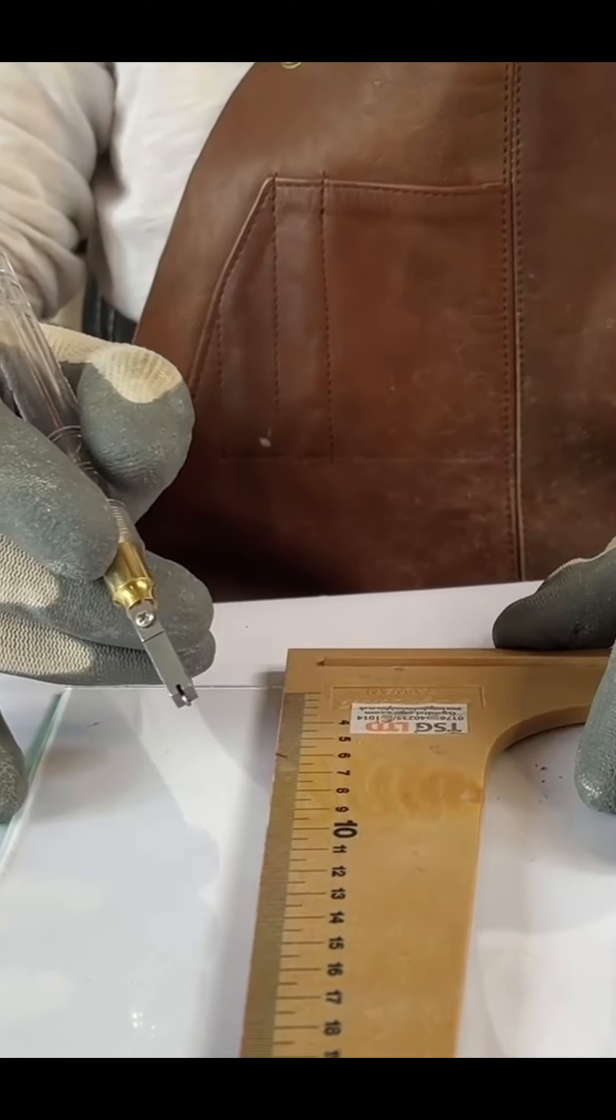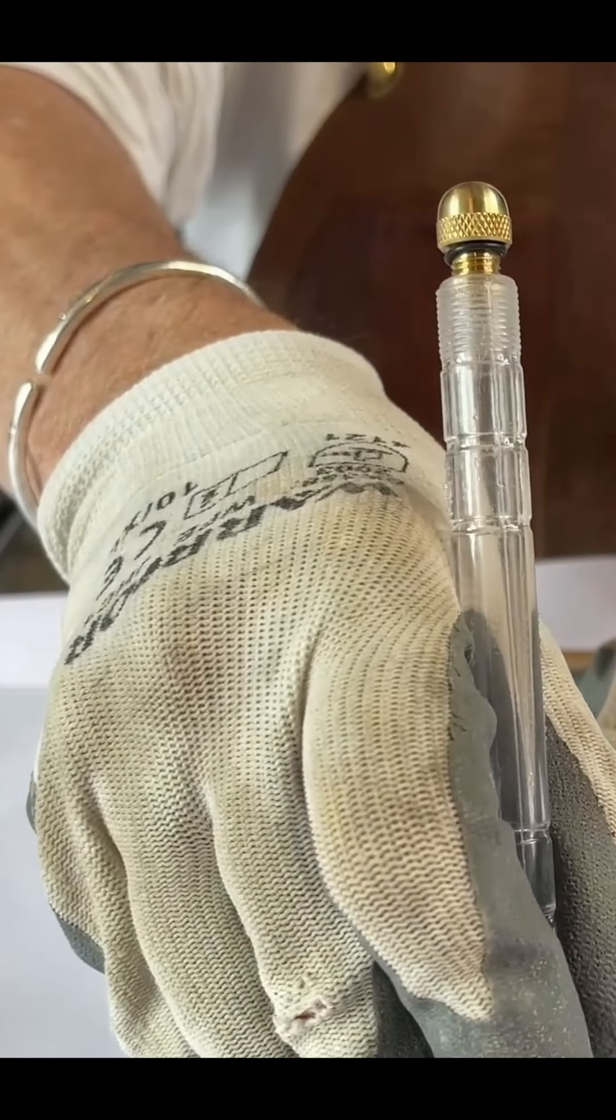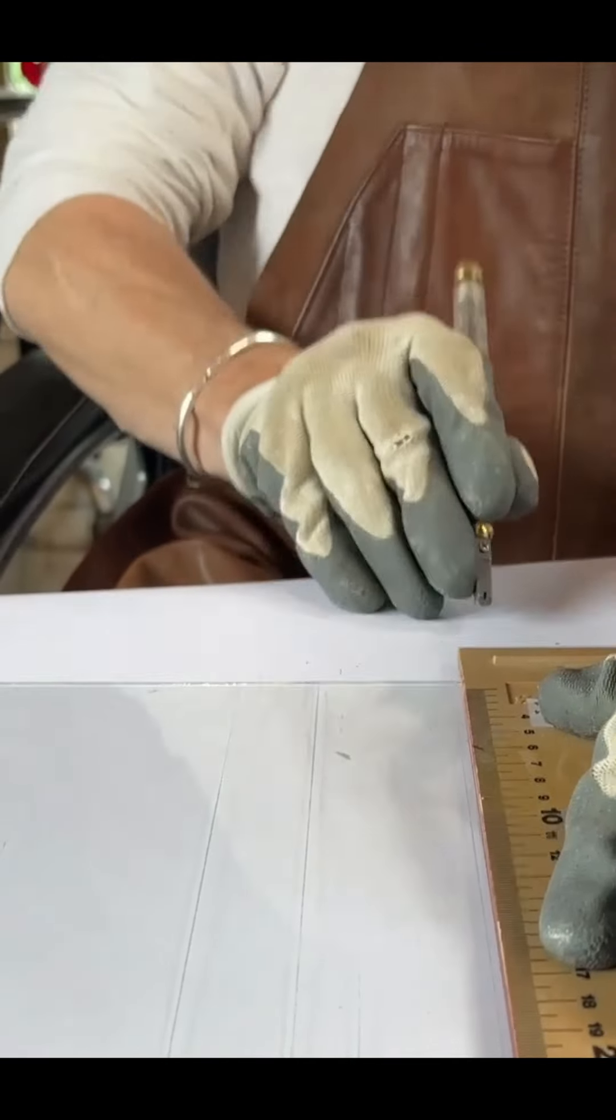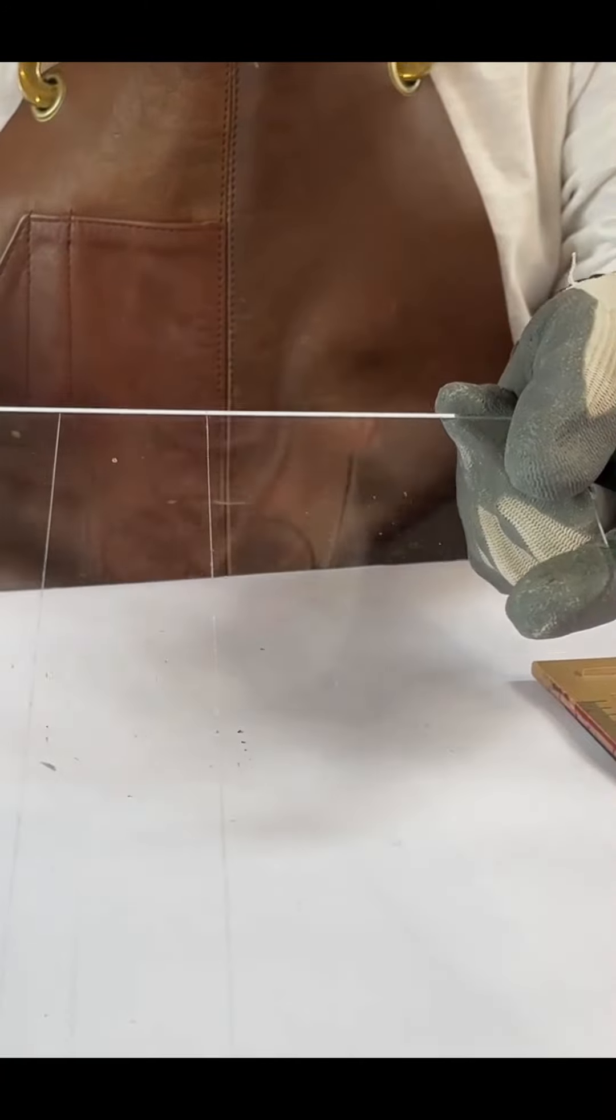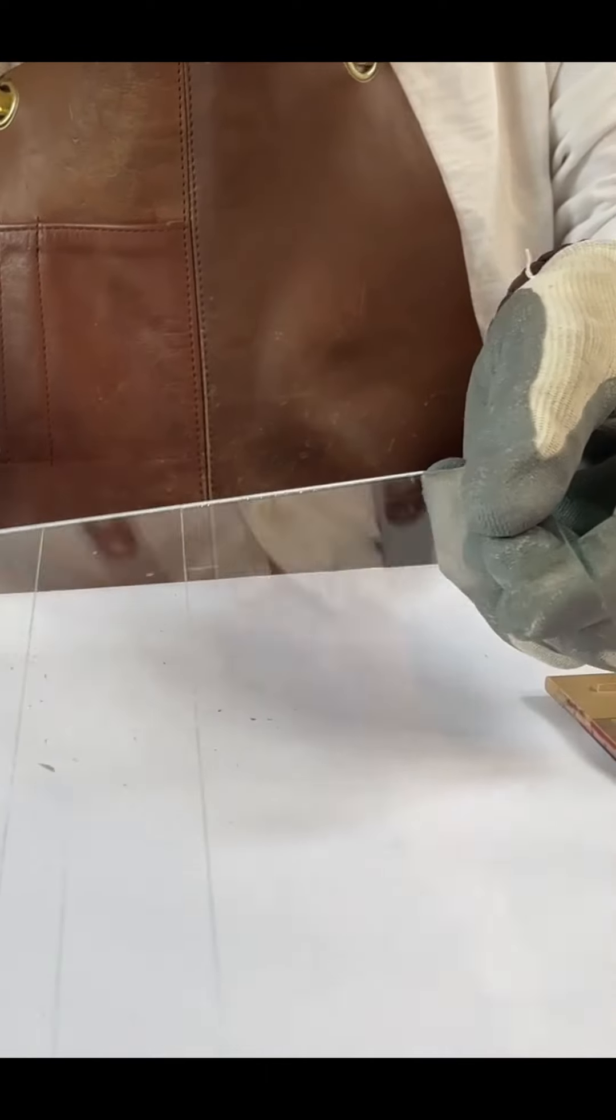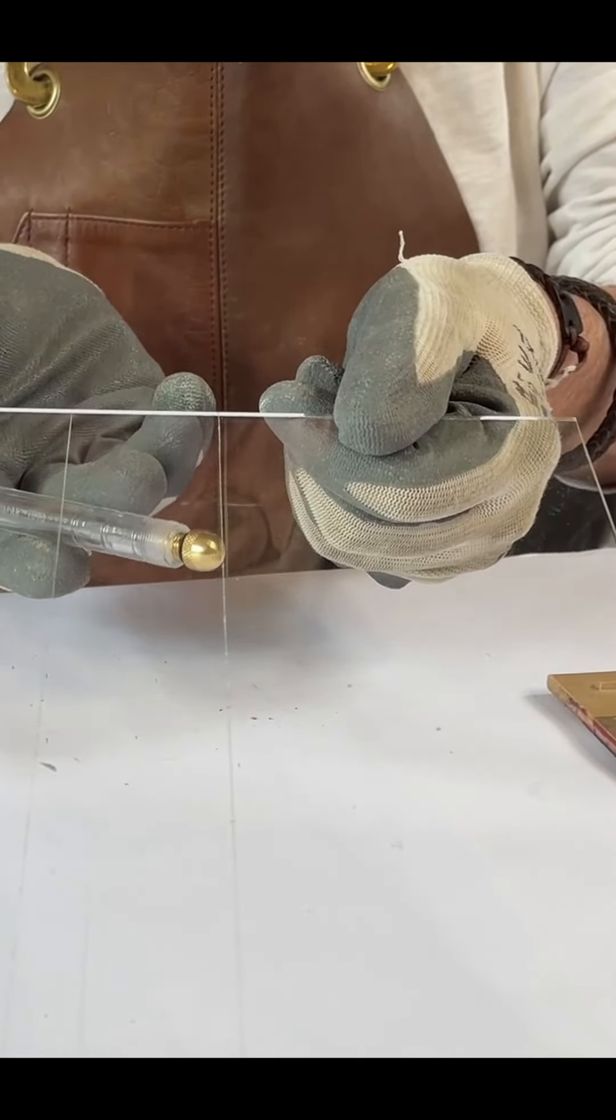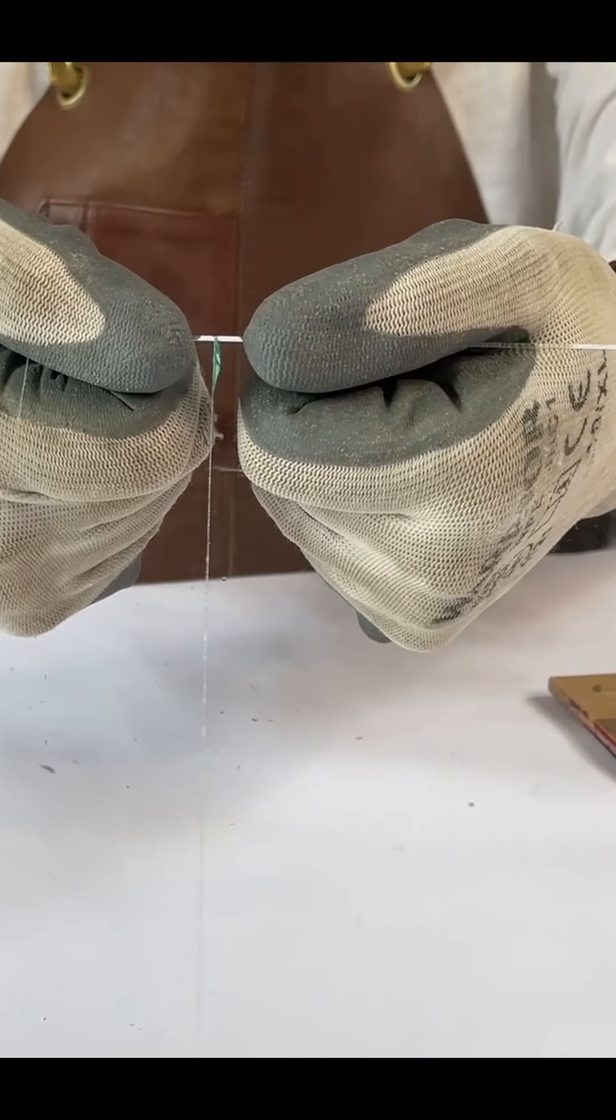So have a listen to the sound of how glass should sound when you're cutting it. Now this is the weak point in the glass, so it allows us then to take our glass cutter with the ball end here, the brass ball end, and very gently tap the back side of the glass like this, and then we break in a downward motion like this.